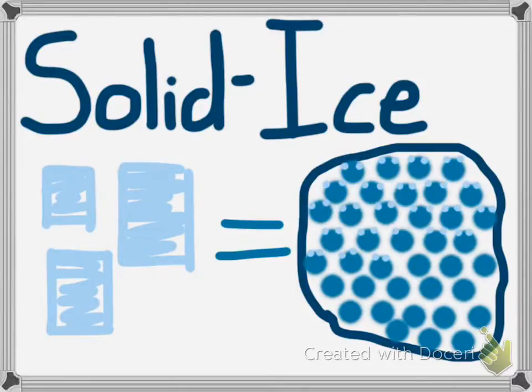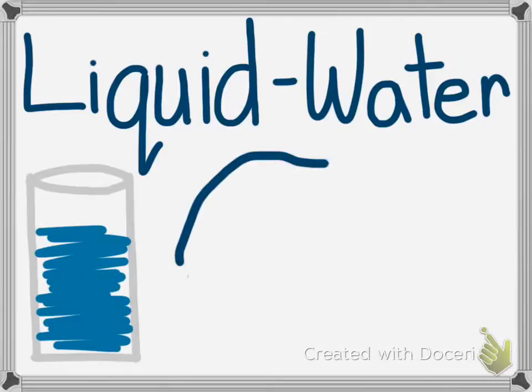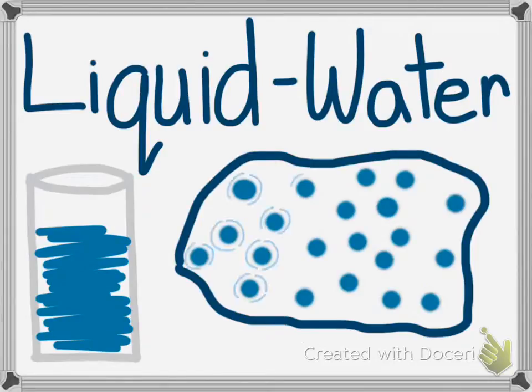A liquid's particles are able to move just slightly in place. They are still bunched together, but in a way squirming. This is why water is able to fill a plane and take the shape that is given.